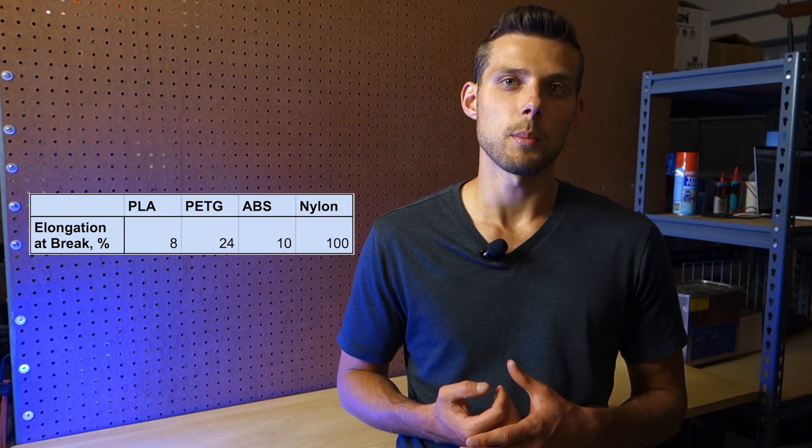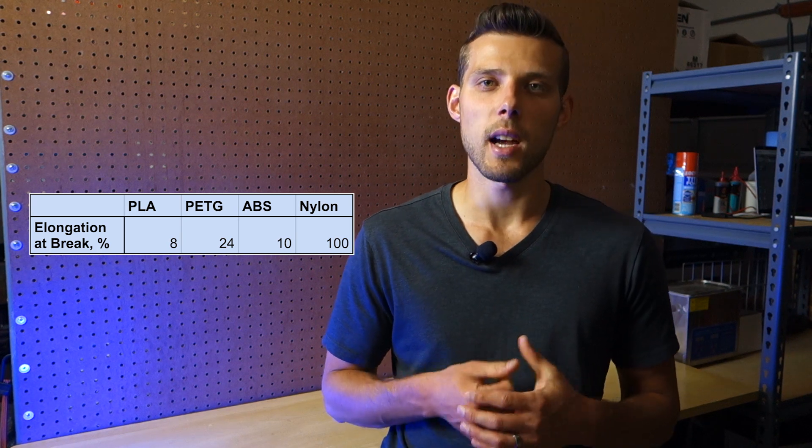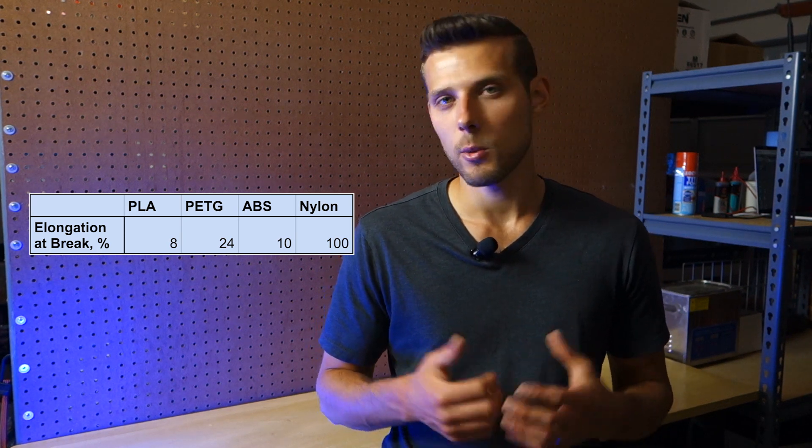The elongation at break value for PLA is 8%, for PETG is 24%, for ABS is 10%, and for nylon it's 100%. So what does this mean?